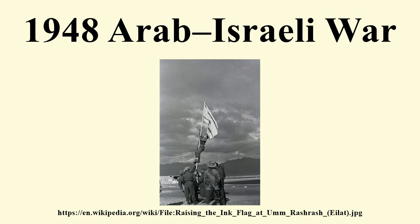Ben-Gurion invested Yigal Yadin with the responsibility to come up with a plan of offense whose timing was related to the foreseeable evacuation of British forces. This strategy, called Plan Dalet, was readied by March and implemented towards the end of April. A separate plan, Operation Nachshon, was devised to lift the siege of Jerusalem. Fifteen hundred men from Haganah's Givati Brigade and Palmach's Harel Brigade conducted sorties to free up the route to the city between 5 and 20 April. Both sides acted offensively in defiance of the partition plan, which foresaw Jerusalem as a corpus separatum under neither Jewish nor Arab jurisdiction.